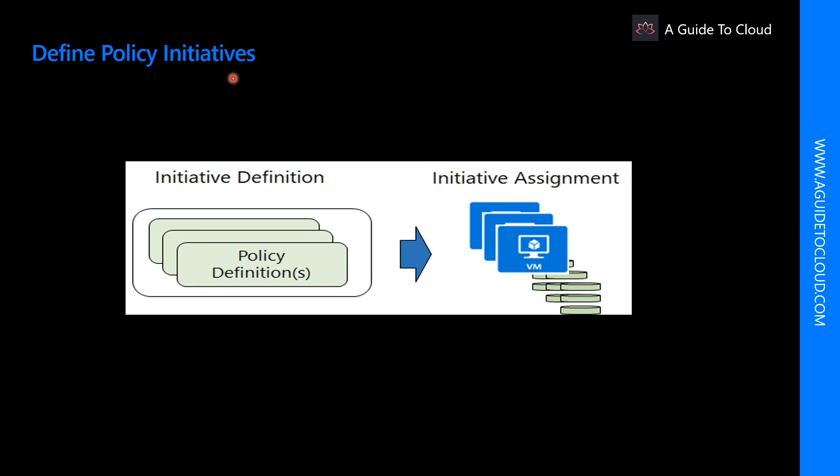Policy initiatives also work with Azure Policy. The first is an initiative definition and the second is initiative assignments. An initiative definition is a set of policy definitions to help track your compliance state for a larger goal. Like a policy assignment, an initiative assignment is an initiative definition assigned to a specific scope, which reduces the need to make several initiative definitions for each scope. The scope could range from a management group to a resource group.